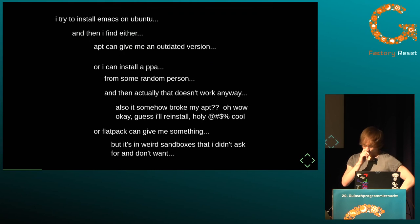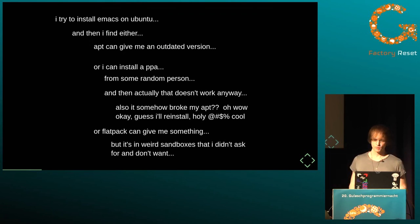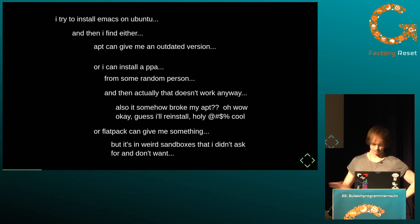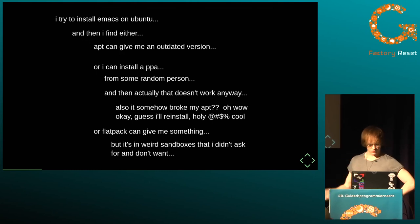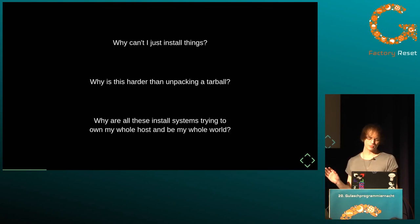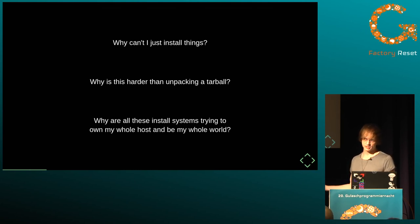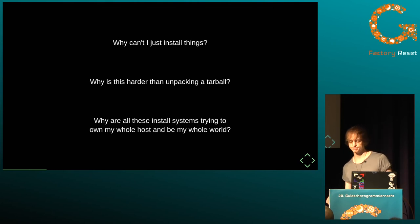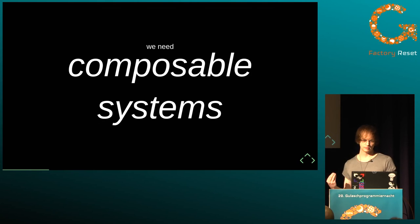I tried to install Emacs the other day and honestly failed. I'm an Ubuntu user. The apt package gave me an outdated version, or I could install a PPA from some other person on the internet — that turned out not to work. Or I could find another version in Flatpak, but it worked strangely because of default sandboxes — it couldn't find my .emacs home directory. Or I could use a totally different distro. Installing things should be easy — about as easy as unpacking a tarball — and that's not the experience I have today.